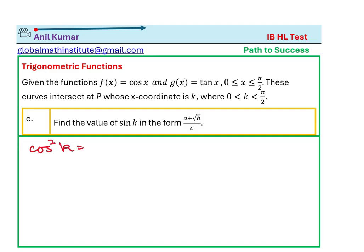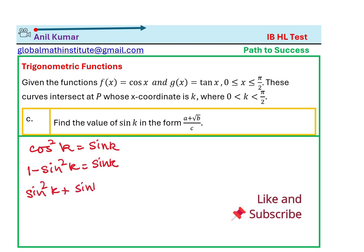Which is cos²k equals sin k. Cos²k can be written as 1 - sin²k, which equals sin k. Bring them together: sin²k + sin k - 1 equals 0. So from here we can find it's a quadratic equation.